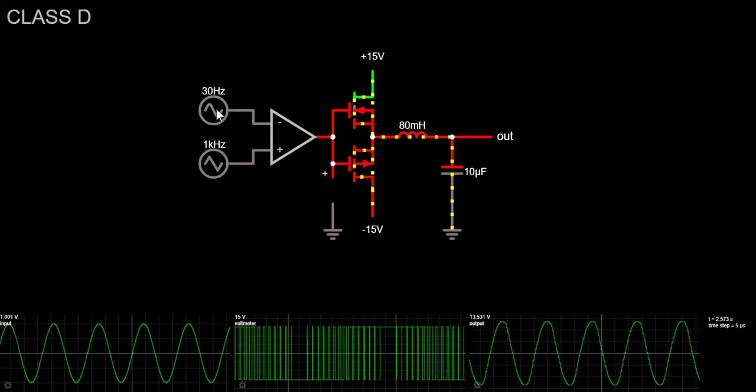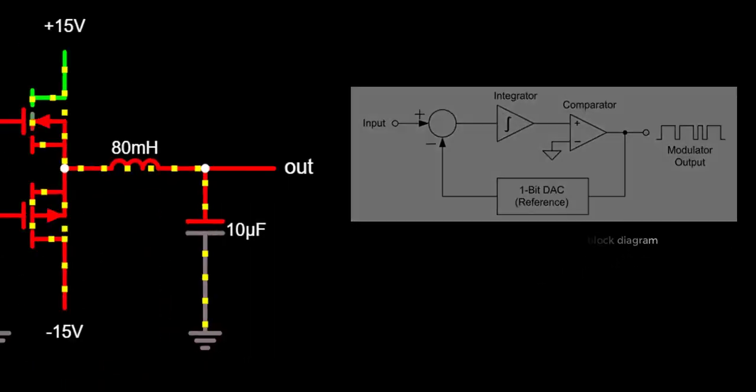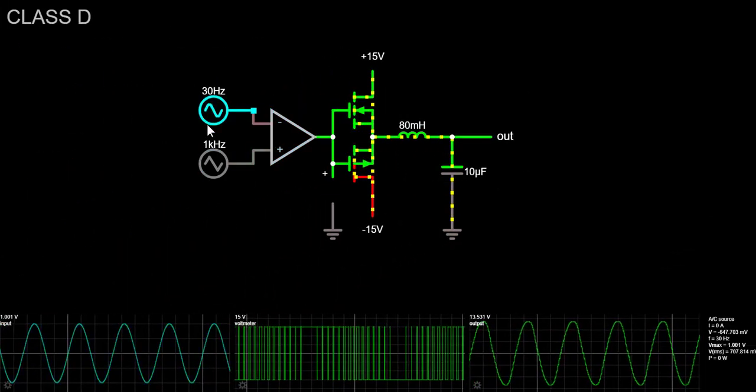There are other methods for converting the signal into pulses, such as delta-sigma modulation, but for this project we will be using PWM.